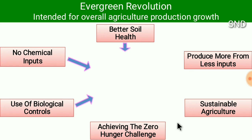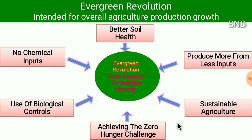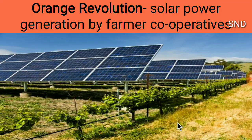All these factors are aiming for the Evergreen Revolution, where we are on the journey from food security to nutrition security. Lastly, the recent Orange Revolution is related with solar power generation by farmer cooperatives. Thank you.